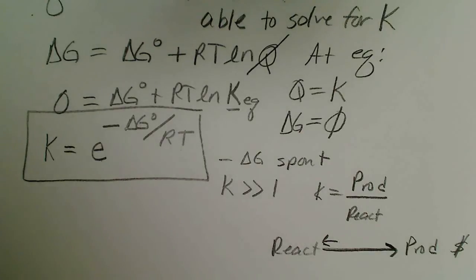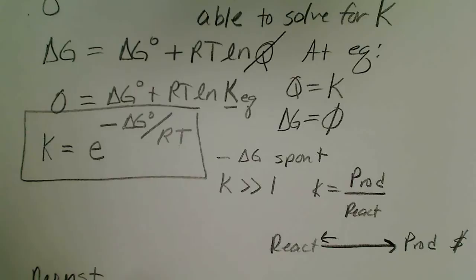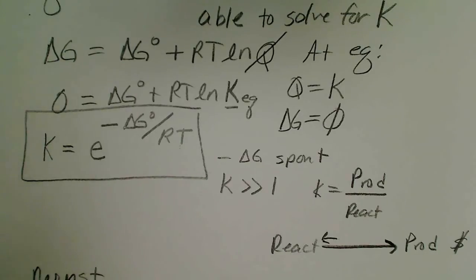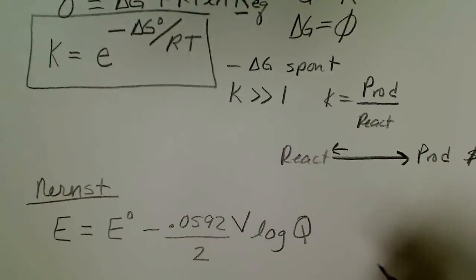So we'll use that same concept now with the Nernst equation. And again the Nernst equation, the cell at non-standard conditions would be the standard state potential minus 0.0592 volts divided by n and the log base ten of Q.